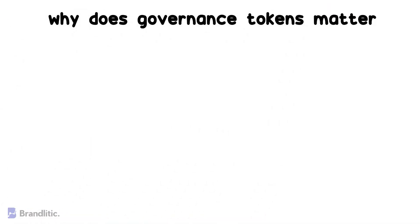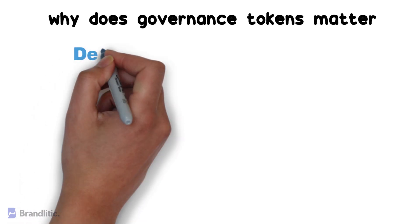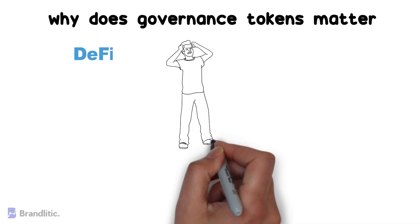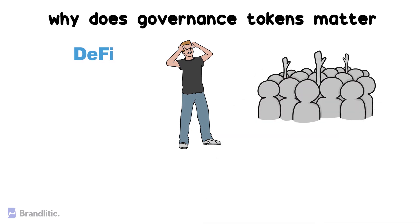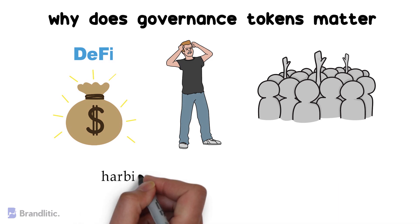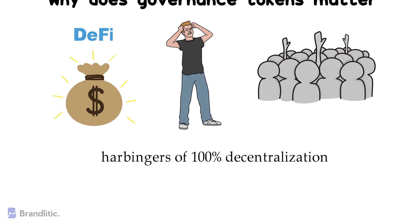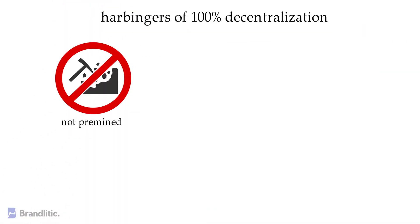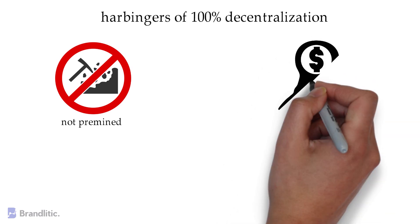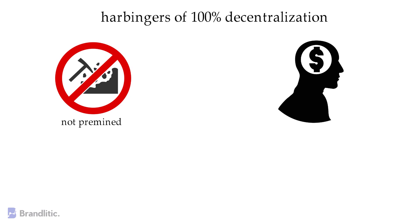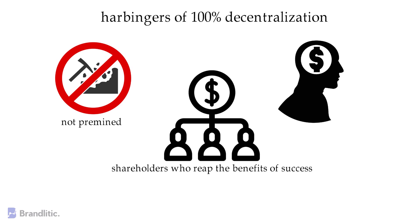Why do governance tokens matter? With the help of governance tokens, no one feels left behind or without a voice in an ecosystem like DeFi. Developers do not have to make hard choices — they can interact with the community and find out what is wrong with the project, why a specific feature should be changed, and how the team should handle funds and partnerships. Ultimately, governance tokens matter because they are harbingers of 100% decentralization. But do note that governance tokens are not pre-mined and the decision-making process is limited to only those who are quite literally invested in the platform. We can think of it as shareholders who reap the benefits of a business's success, and hence the company can only succeed if those involved are financially incentivized to push the entire project forward.